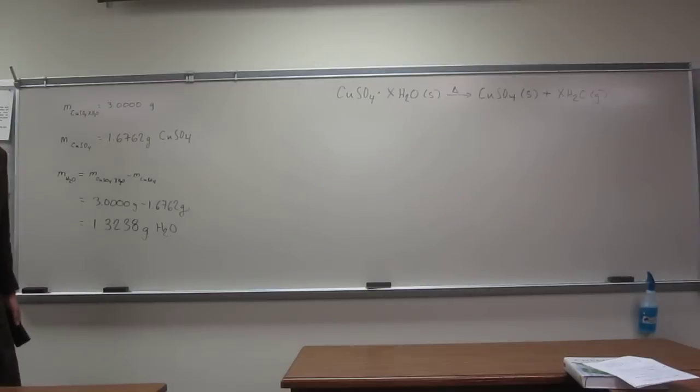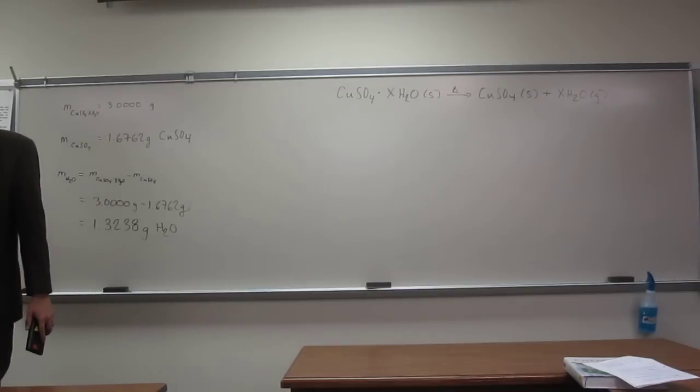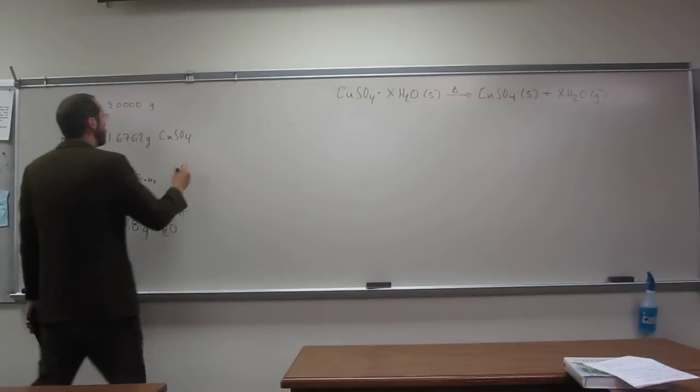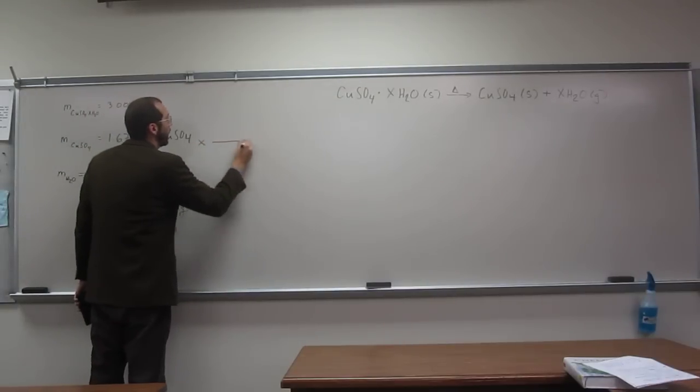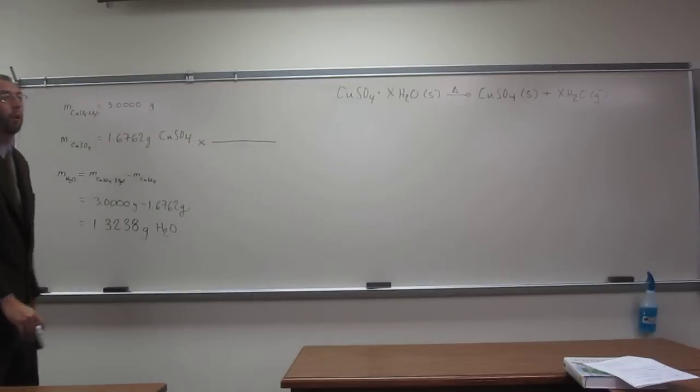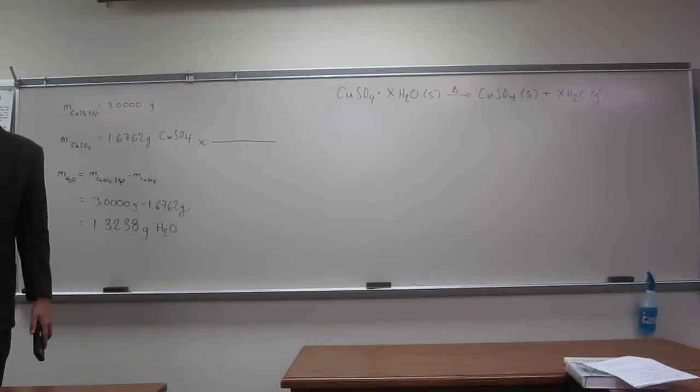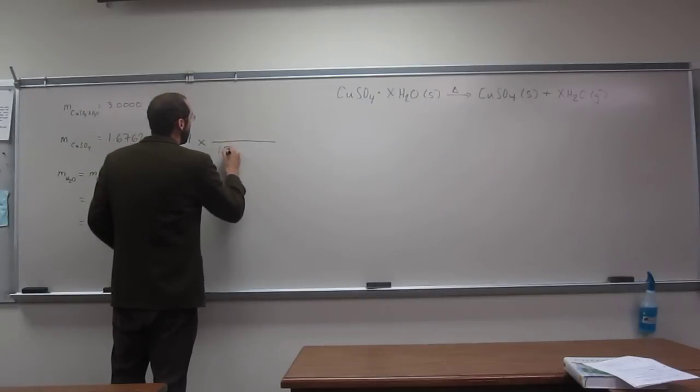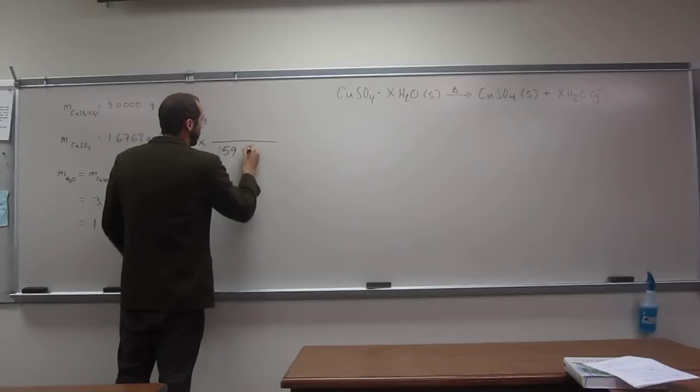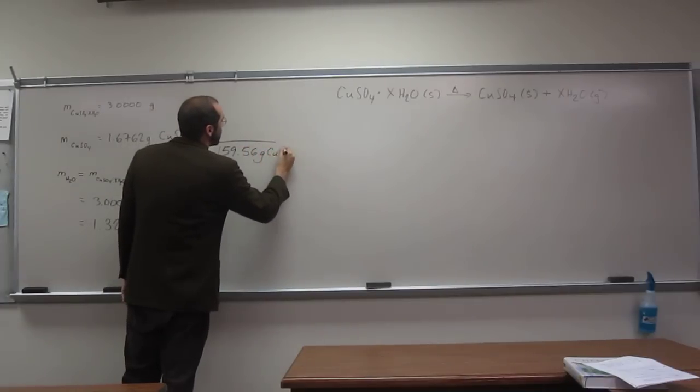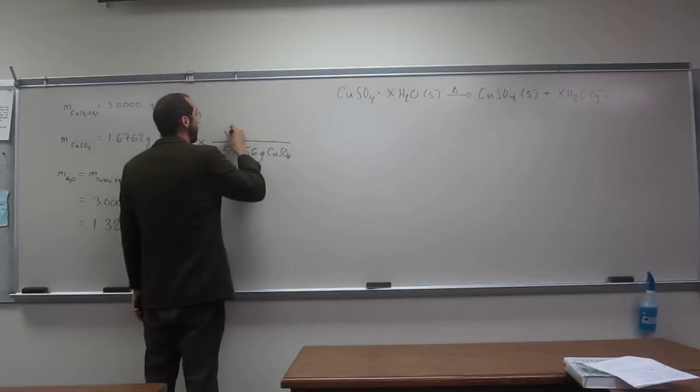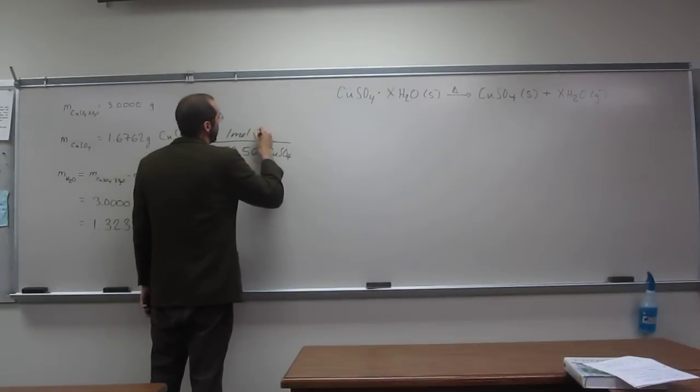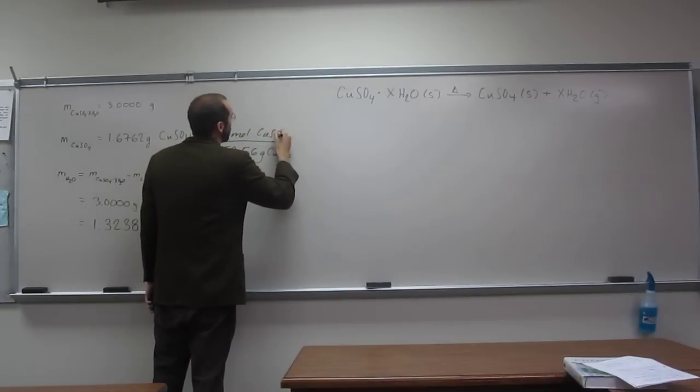So in order to do this, we need to figure out the number of moles of each of these things. So I've gone ahead and calculated the molar mass of CUSO4 previously, and it's 159.56 grams of CUSO4 copper-2-sulfate per one mole of copper-2-sulfate.